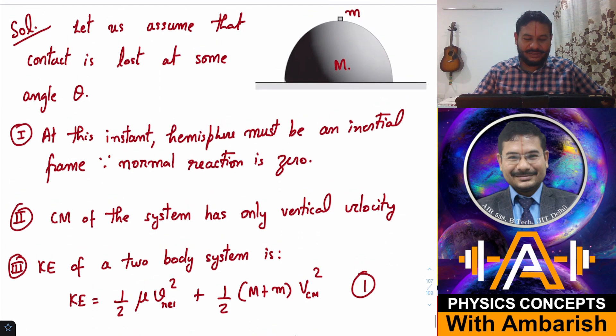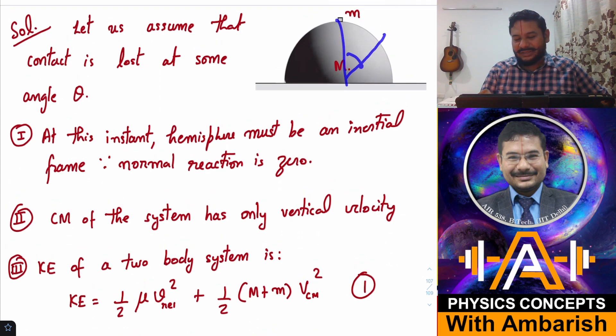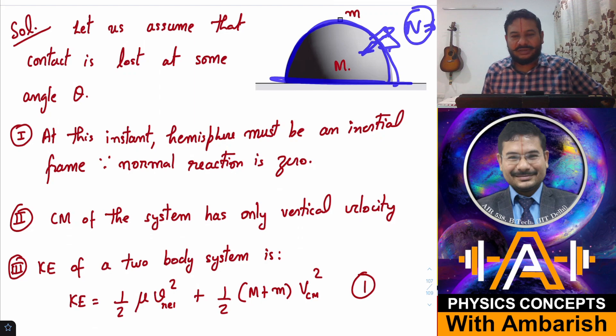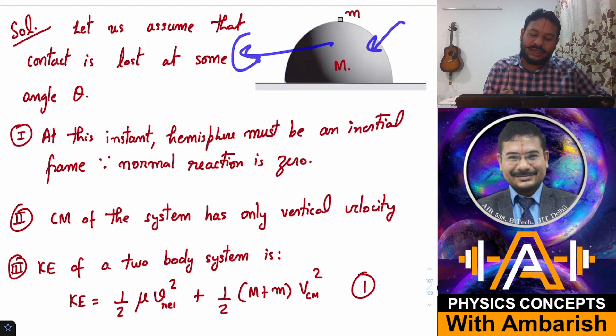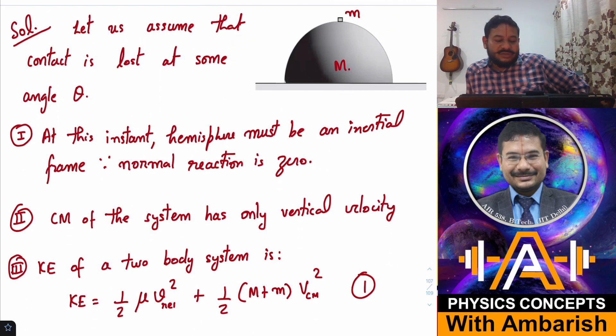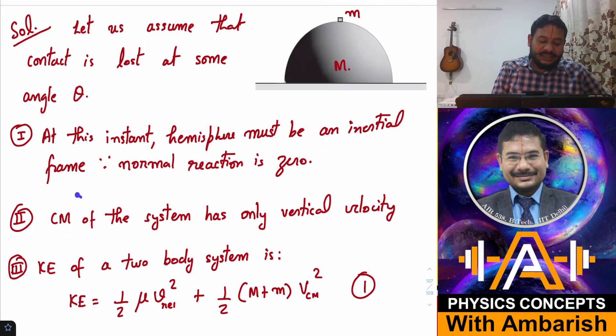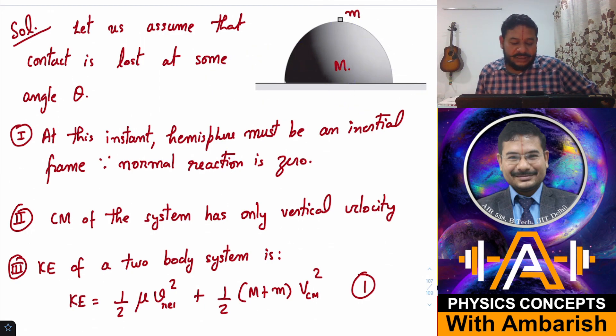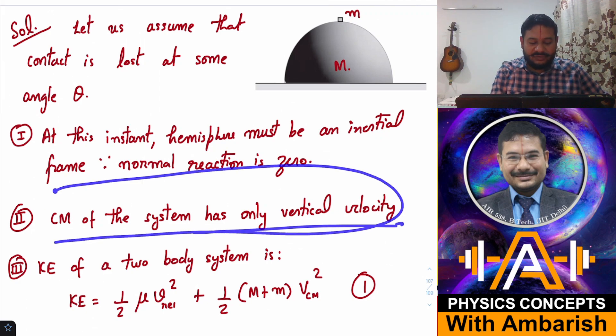Let's assume that contact is lost at some angle theta. At this instant, because the contact is being lost, the normal reaction is zero. And if normal reaction is zero, that means the hemisphere must be an inertial frame. Why? Because the only force accelerating this hemisphere in the backward direction was the normal reaction. So when the normal reaction becomes zero, the hemisphere must be an inertial frame. That's the first thing we can use in the problem.